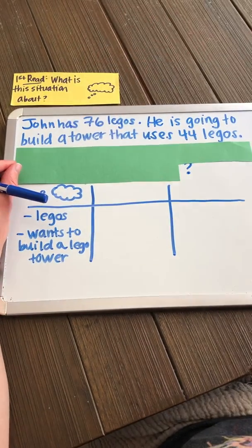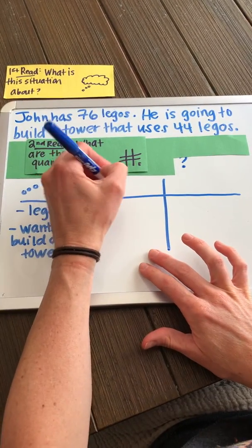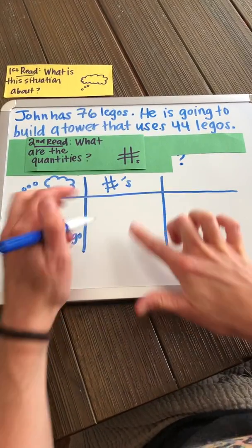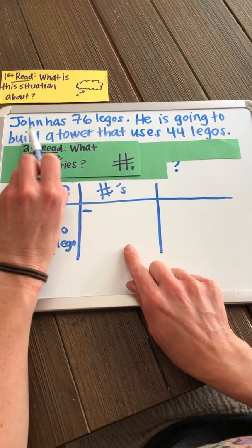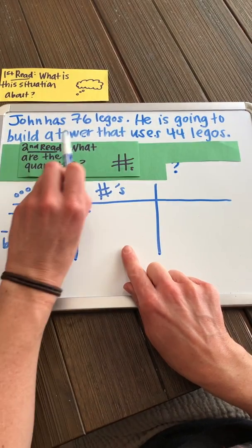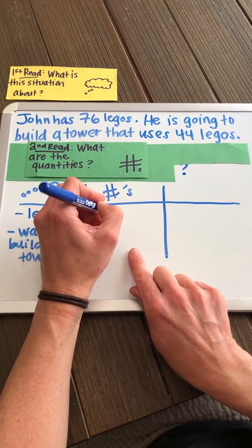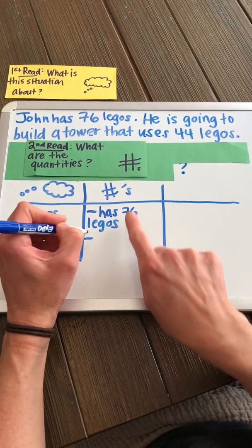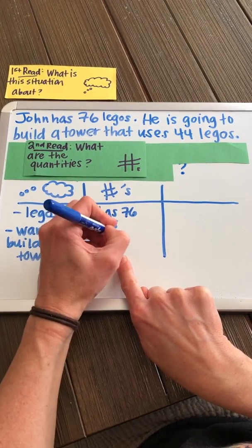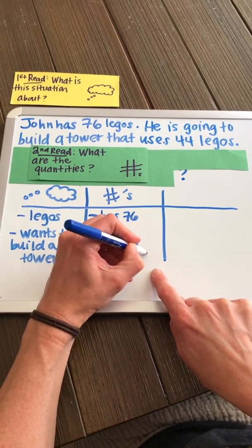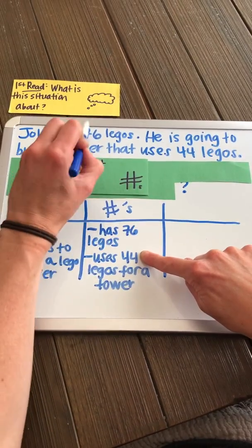Now I'm going to read it a second time. The second time I want to think about the quantities, or the numbers, in this problem. I'm going to use a number symbol and write down any information about the quantities here. Let's read it again. John has 76 Legos. He is going to build a tower that uses 44 Legos. He has 76 Legos — that's one quantity. He is using 44 Legos for a tower — that's the second quantity. So there are two quantities: 76 and 44.